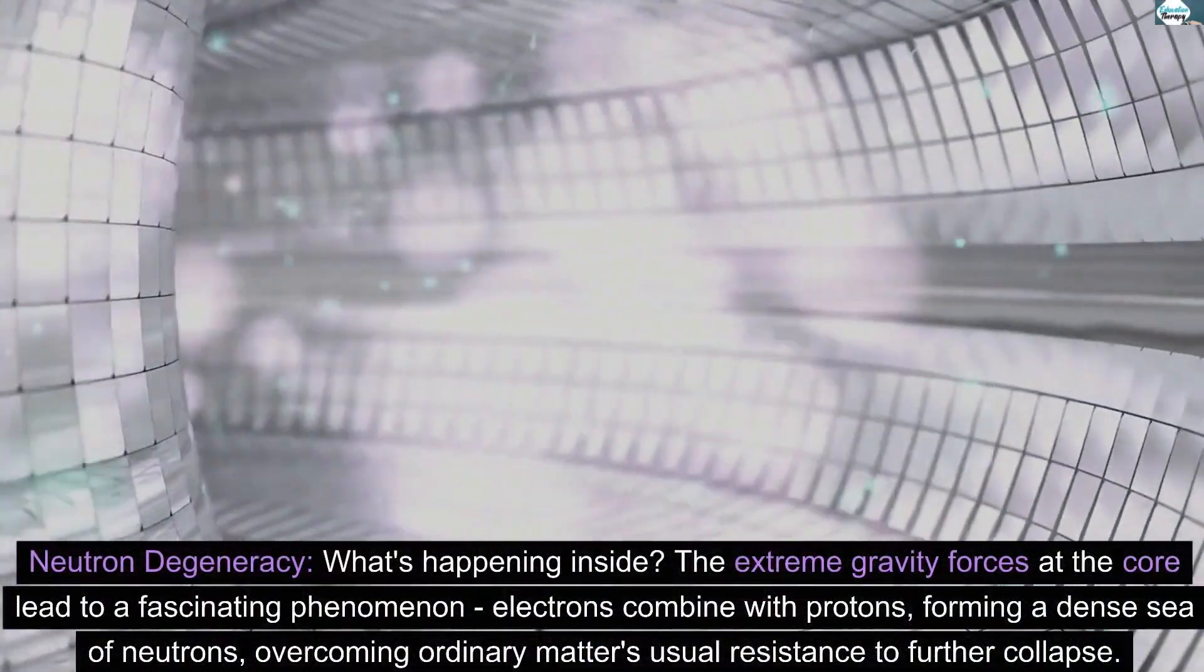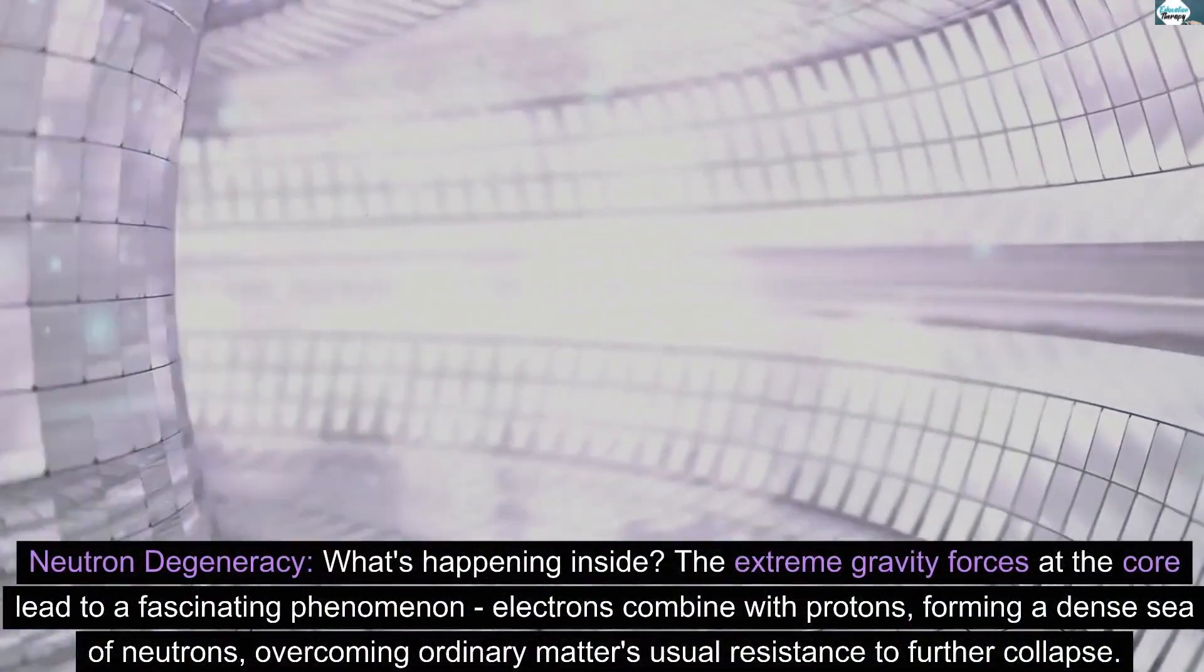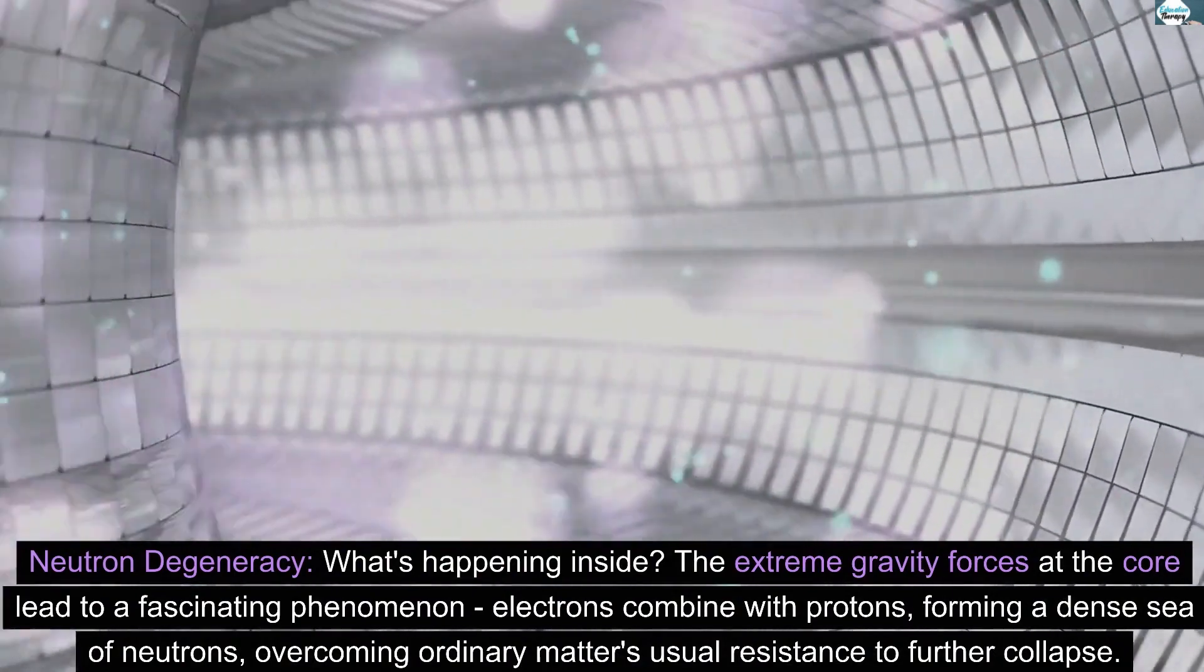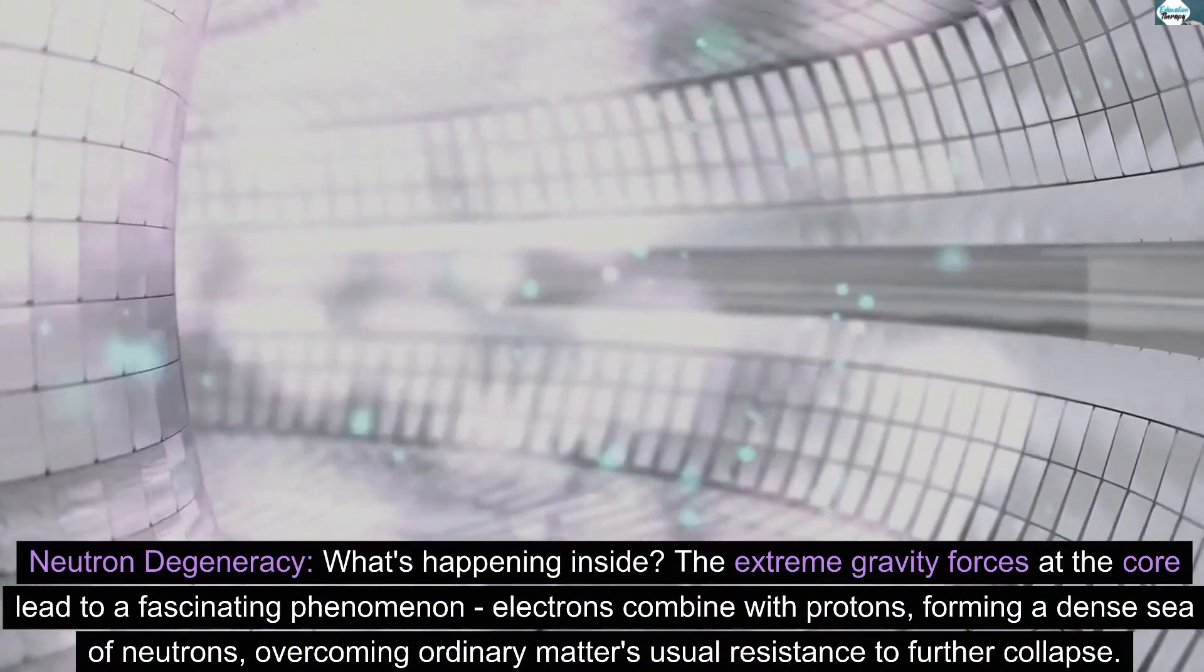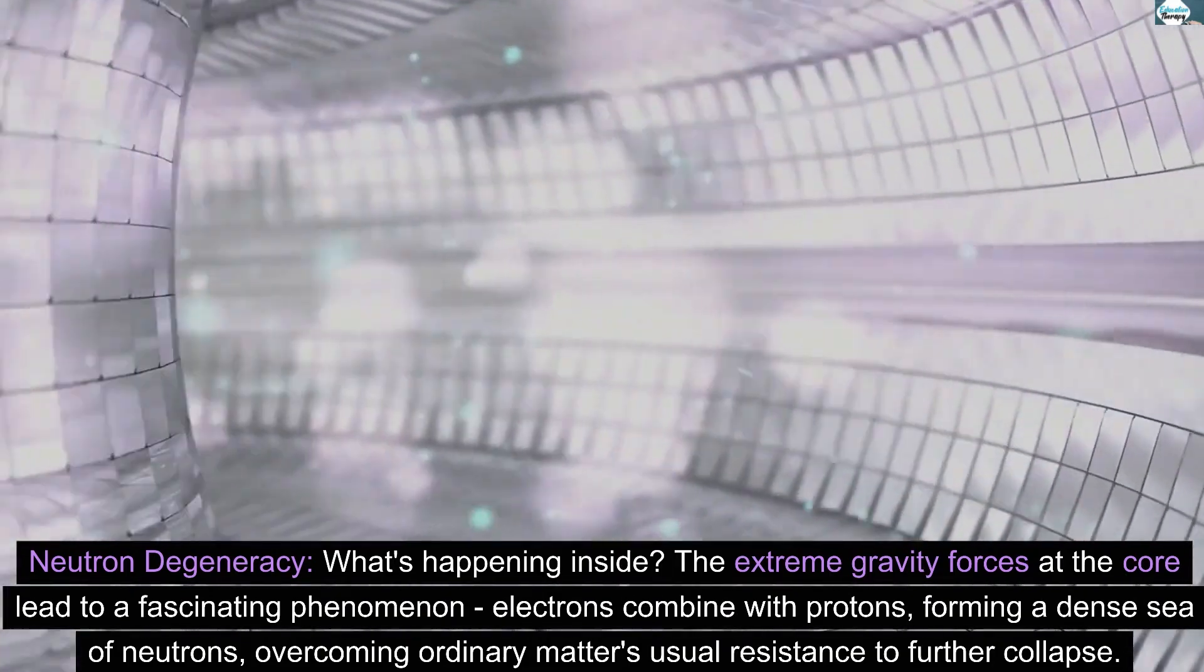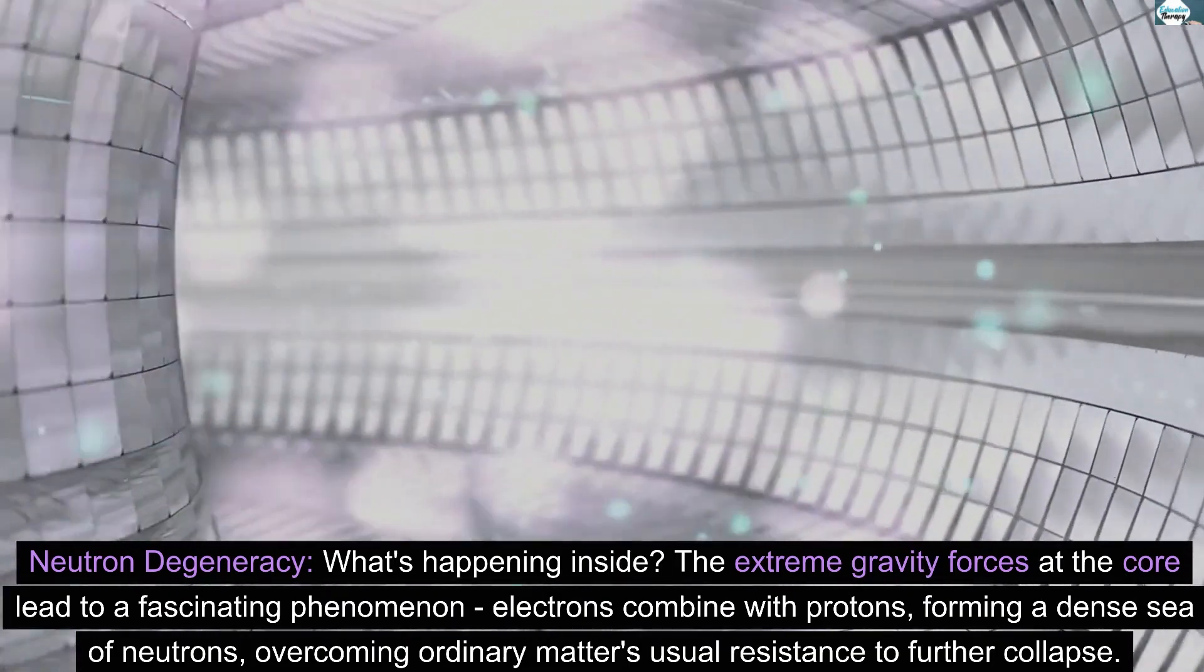Neutron degeneracy. What's happening inside? The extreme gravity forces at the core lead to a fascinating phenomenon. Electrons combine with protons, forming a dense sea of neutrons, overcoming ordinary matter's usual resistance to further collapse.